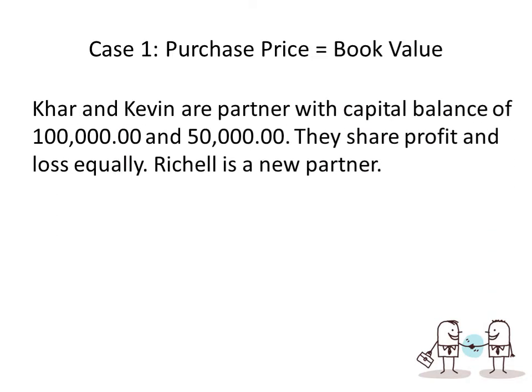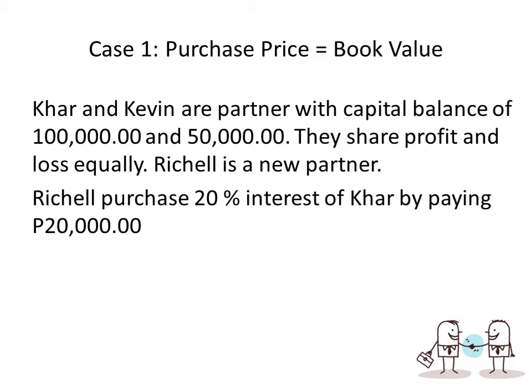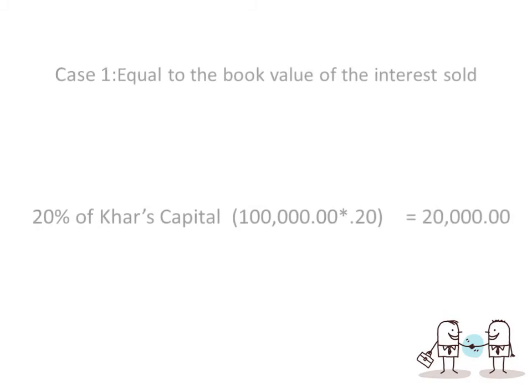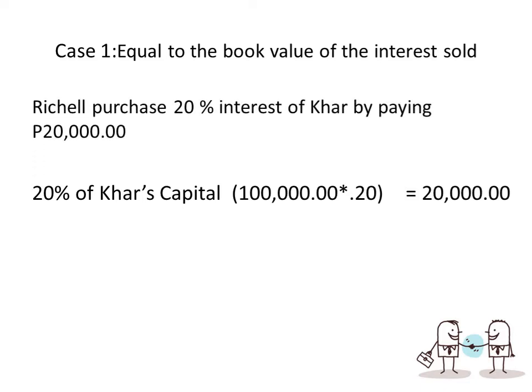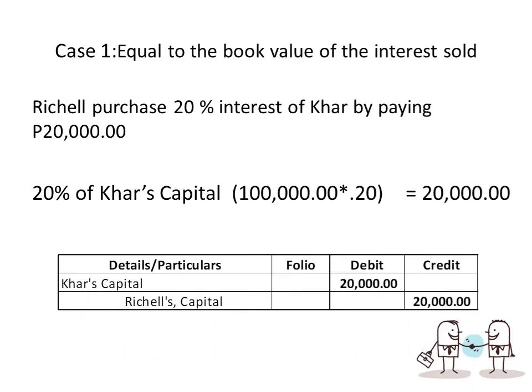Case 1 — Purchase of interest from the partnership: Kar and Kevin are partners with capital balances of $100,000 and $50,000, sharing profit and loss equally. Richelle is a new partner who purchased 20% of Kar's interest by paying $20,000. Kar's book value of the 20% share is $20,000, so the purchase price equals the book value. The entry is: debit Kar's capital $20,000 and credit Richelle's capital $20,000.